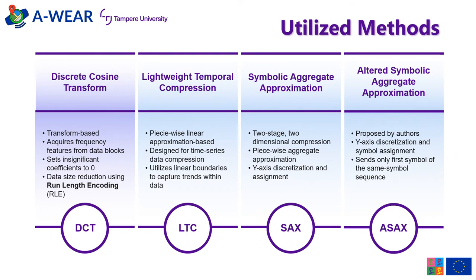Let's present the compression methods we utilized in this work. Discrete cosine transform was chosen as a commonly used representative of transform-based compression methods, widely utilized in image and video formats. It extracts different frequency features from the input of a fixed size. The compression is based on setting insignificant features to zero. In this work, we combine it with run-length encoding to remove redundancy from the data. The important parameter of DCT is the block size or step, which has been set to 100 for the following analysis.